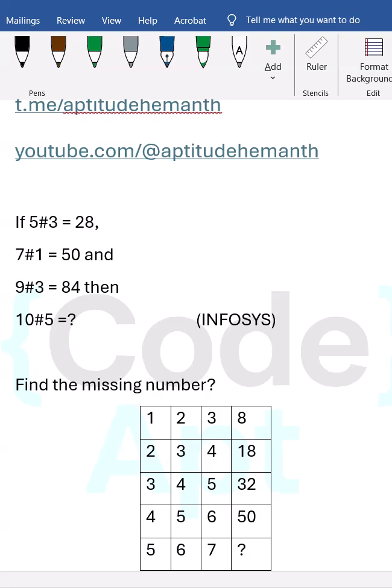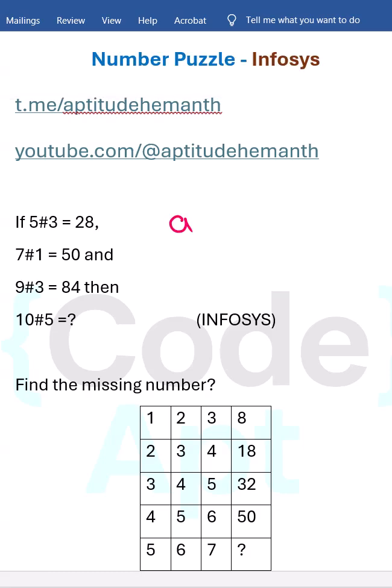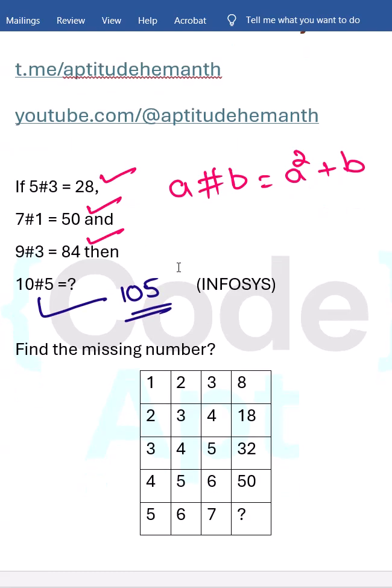Or square or adding something. If you work on our first two or three, the logic which is satisfying you should apply for the next one also. If you try to crack the logic, we design like a hash b is nothing but a square plus b. Sometimes it may be a square plus b square, a into b, different variations, or a plus b whole square. But in this question the logic which is satisfying all these three given data is a hash b is nothing but a square plus b. If that is the case, 10 hash 5 is 10 square plus 5, which is 105.